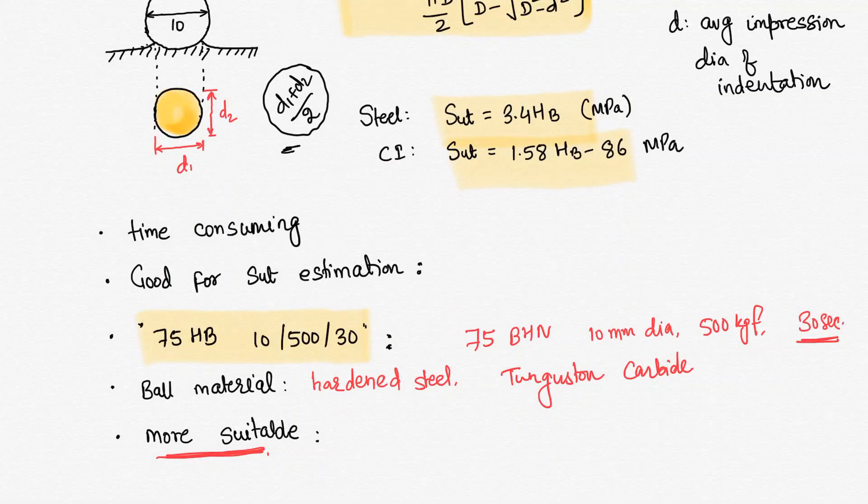That was about the Brinell hardness test. If you have given some SUT value, then we can find hardness value. If you have given hardness value, then we can find SUT value too.